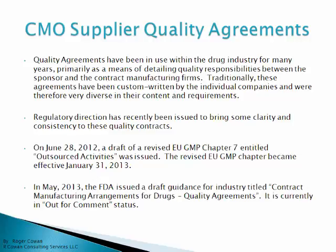On June 28, 2012, a draft of a revised EU GMP Chapter 7, called Outsourced Activities, was issued. This revised chapter became effective on January 31, 2013. In May 2013, the FDA issued a draft guidance for industry called Contract Manufacturing Arrangements for Drugs Quality Agreements. Currently, it is still out for comment status, so it's not finalized yet.